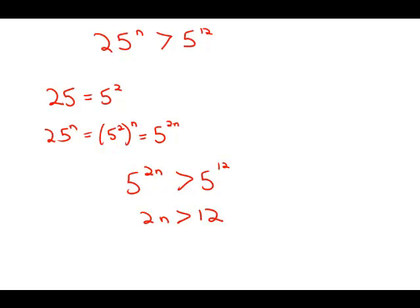2n is greater than 12. What is the smallest integer for which 2n is greater than 12? Well, if n equals 6, they're equal, so that doesn't satisfy it. So it has to be 1 bigger than 6. n equals 7. And that is answer choice B.